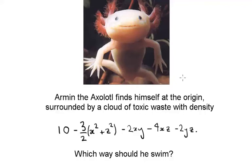Armin the axolotl finds himself at the origin surrounded by a cloud of toxic waste with density given by this formula: 10 minus 3 halves (x squared plus z squared), minus 2xy, minus 4xz, minus 2yz. And we are asked which way should he swim.